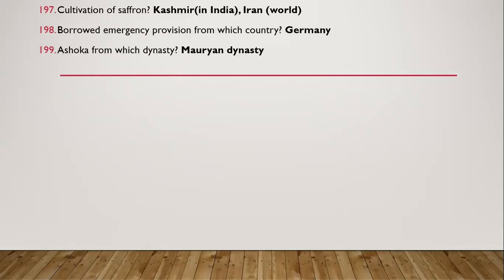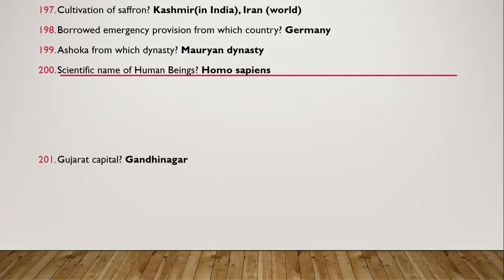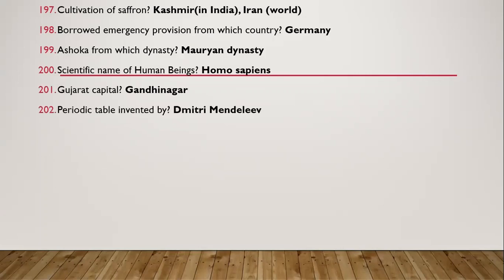Question 192: Ashoka is from which dynasty? Mauryan dynasty. Question 193: Scientific name of human beings is Homo sapiens. Question 194: Gujarat capital — Gandhinagar.